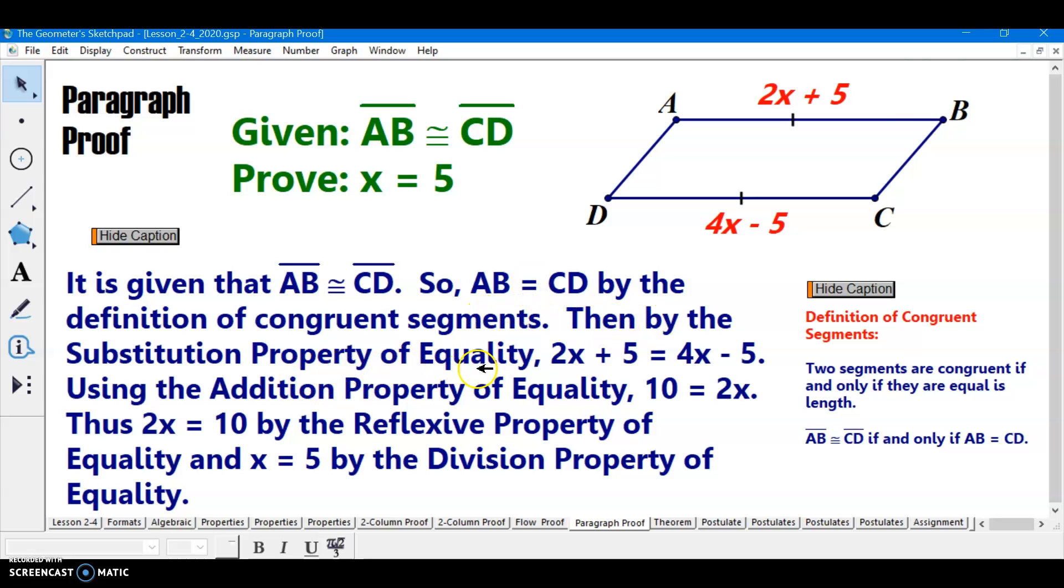So then by the substitution property of equality, because in the picture we can see the distance from A to B is given as 2x plus 5. So we replace AB with 2x plus 5. We replace CD with 4x minus 5. So if we're replacing that substitution. See, I'm providing the statements and the reasons. I'm just writing it as a paragraph. Hence, we call it a paragraph proof.